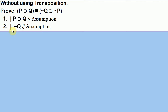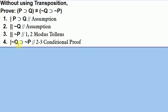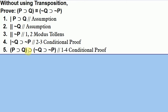We now have two bars because we're two scopes deep with assumptions — each time we open a new assumption we create a new scope. With not Q, we can use modus tollens to get not P. That gives us if not Q then not P, so we close off this inner conditional proof and get if not Q then not P by the rule of conditional proof. We then close off the outer conditional proof to get: if P then Q implies if not Q then not P, by conditional proof from lines one through four.